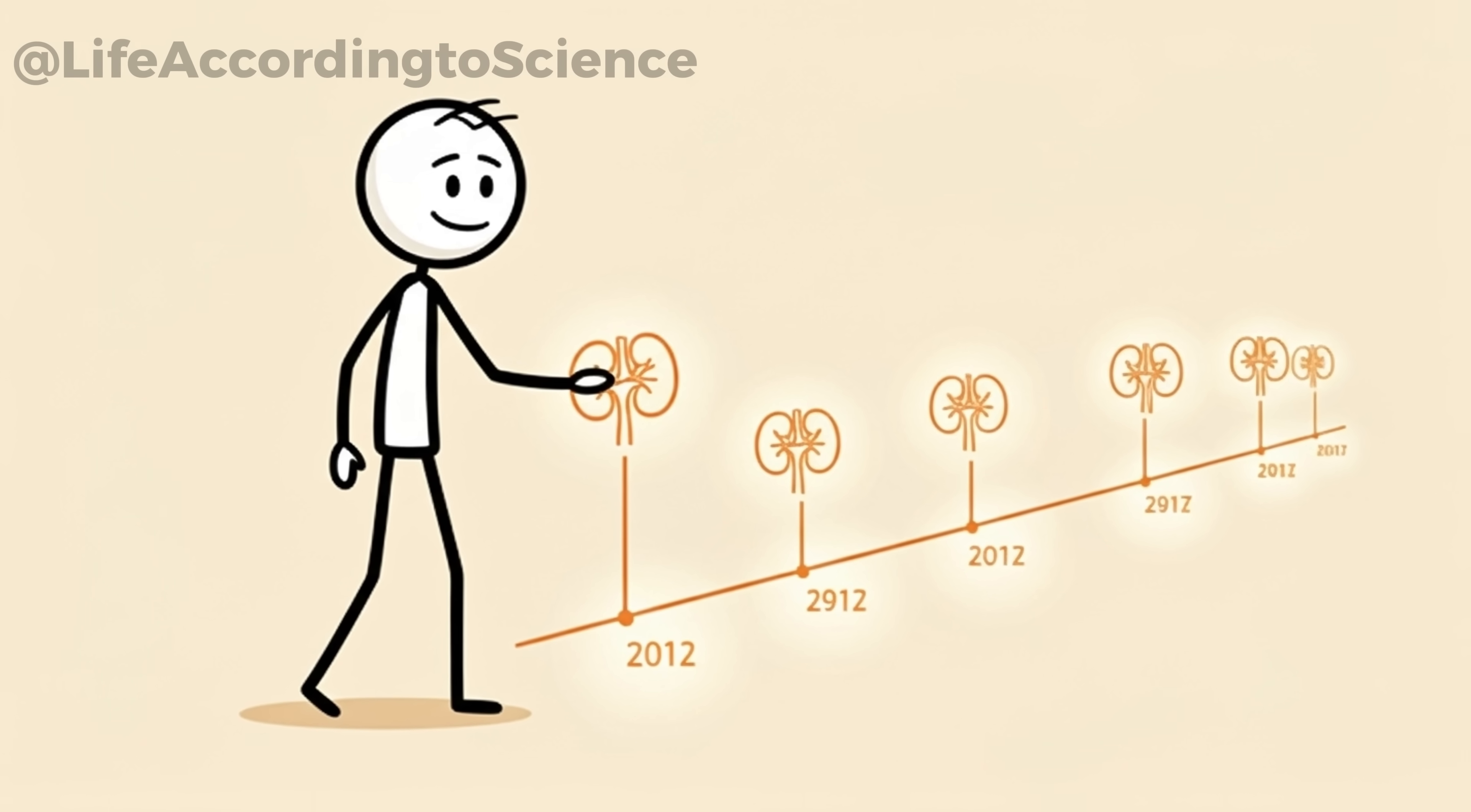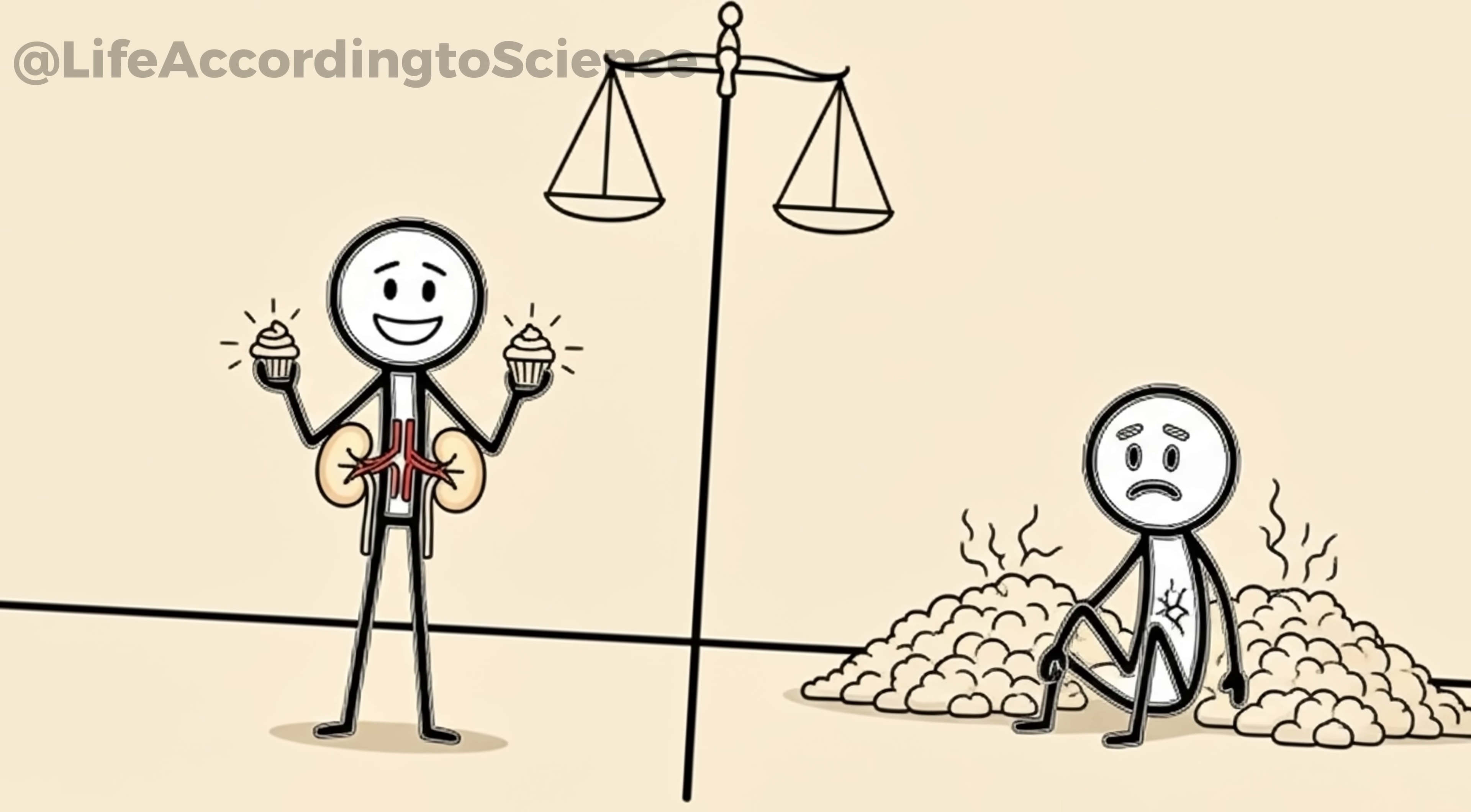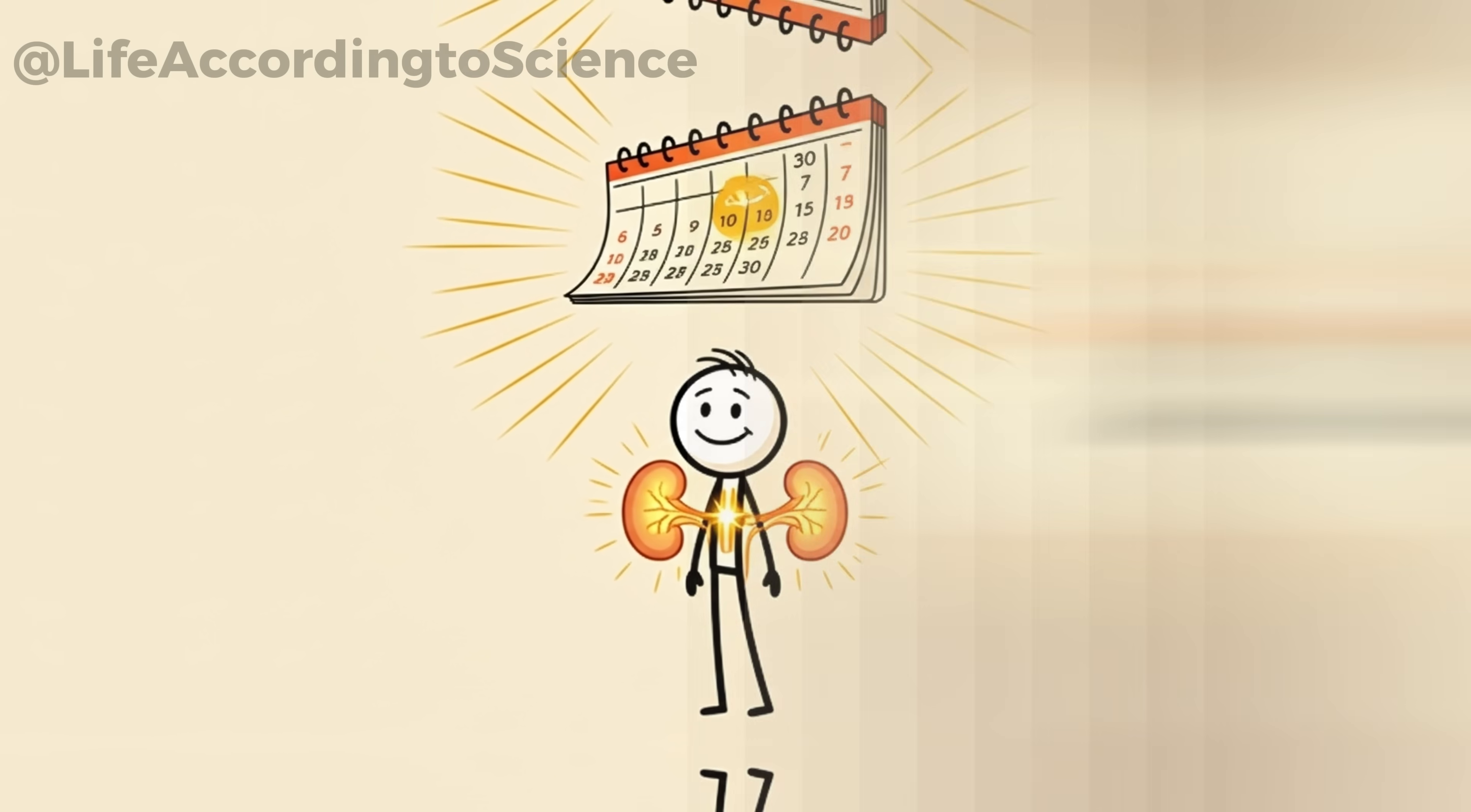The truth is, your kidneys don't just benefit in a month. They benefit for life when sugar is minimized. Every day without added sugar is another day of protection against a future on dialysis. Of course, the occasional treat won't ruin your kidneys, but daily excess will. And that's the real message. Moderation protects. Elimination heals. So after 30 days, science is clear. Your kidneys will thank you today, tomorrow, and for every year you keep sugar in check.